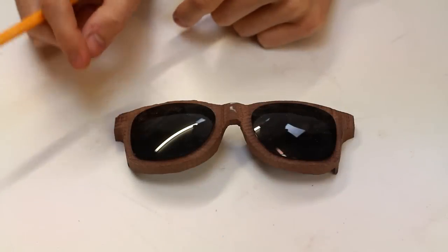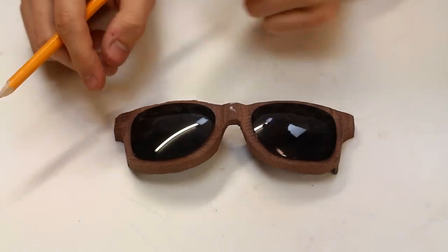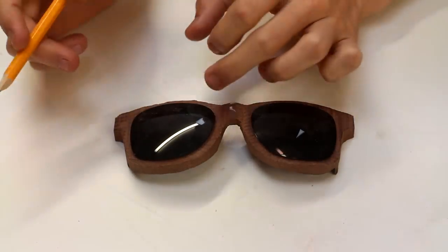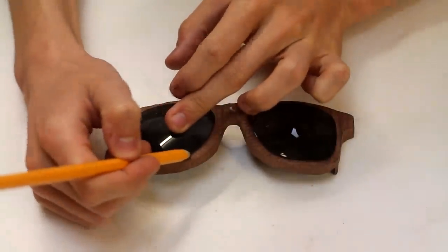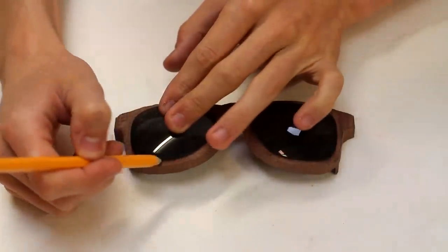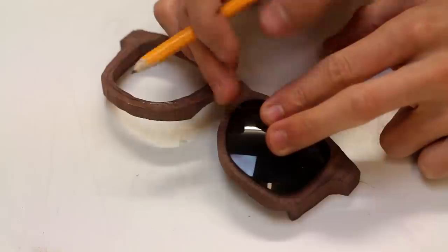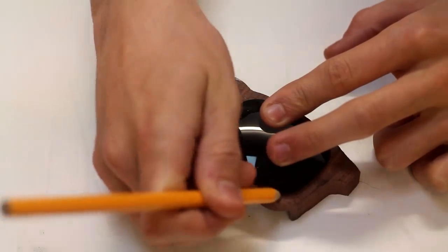With the rough shape cut out, the next thing that we need to do is to fit the lenses. So what I'm just doing here is using a sharp pencil, marking as best I can around the lenses in the position that I want.